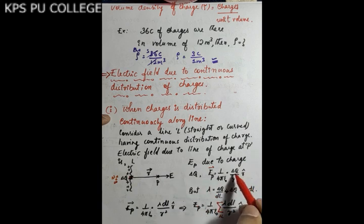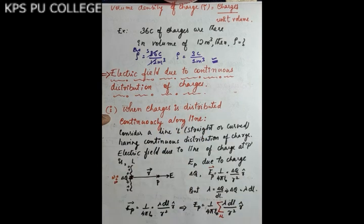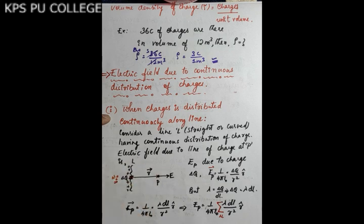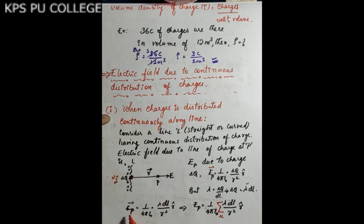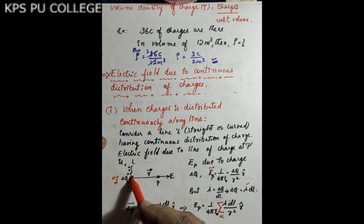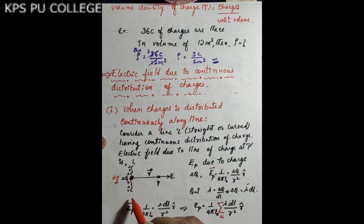We know that lambda (λ) is the linear charge density, defined as λ = δq / δl, so δq = λ · δl. Substituting this into the electric field expression, the electric field at point P due to charge δq — which is λ·δl — gives us the contribution from that small length element.